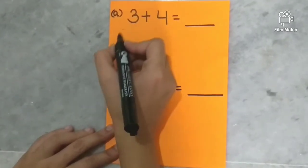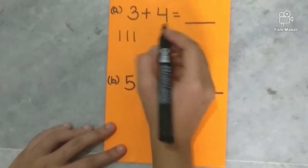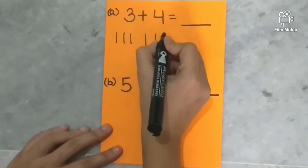First we will draw three lines. One, two, three. Now count all the lines. One, two, three, four.